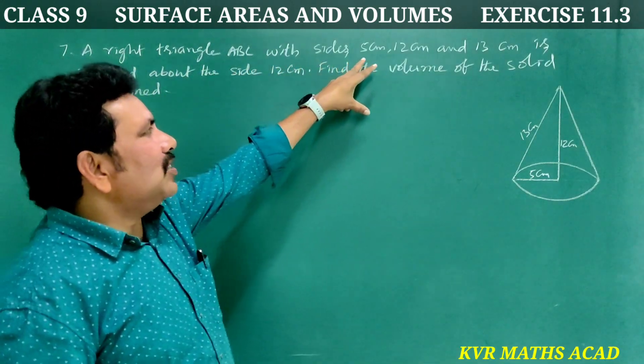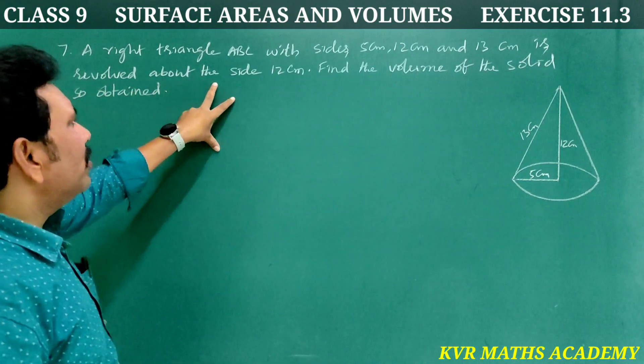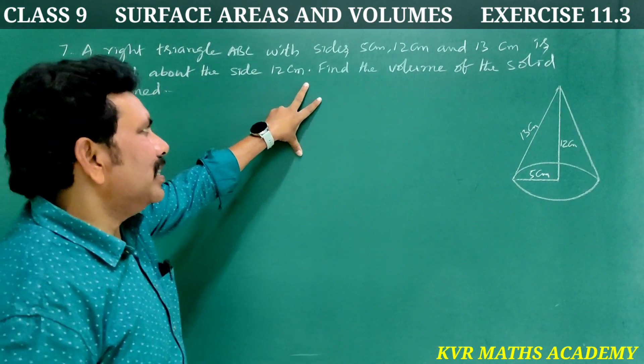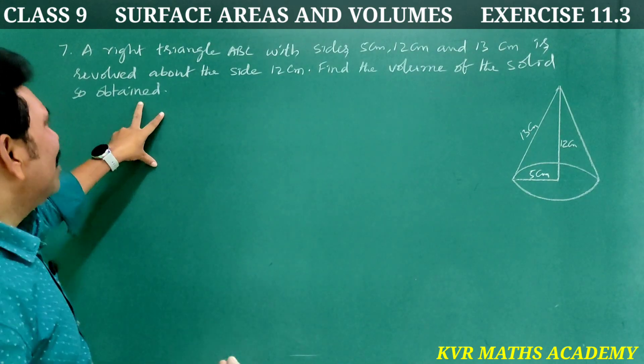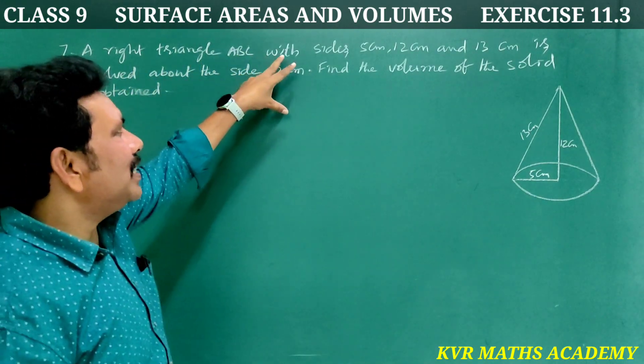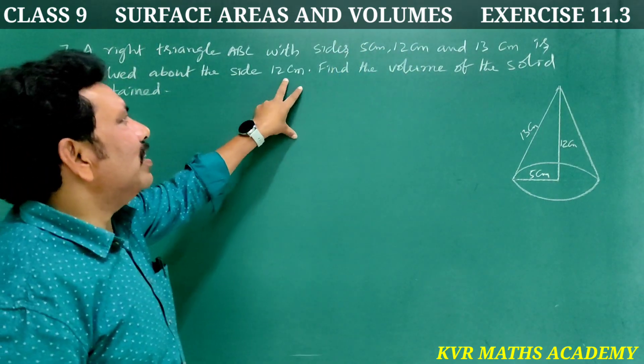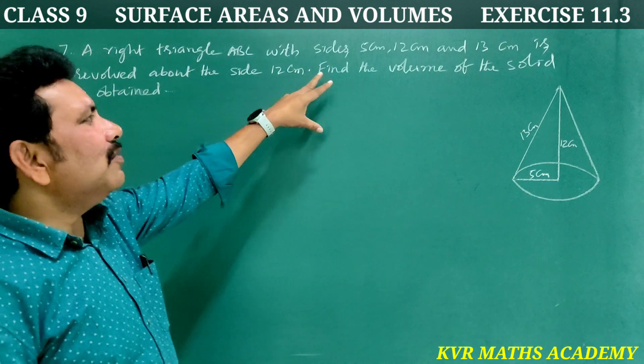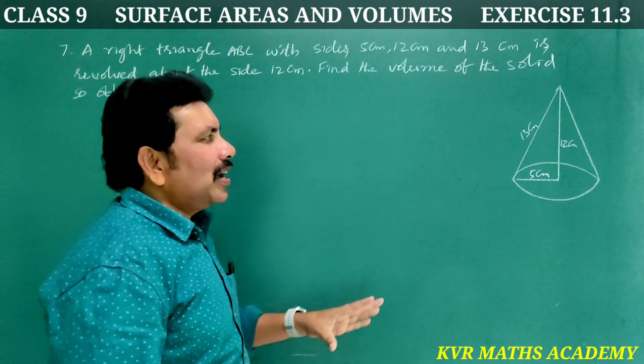Question 7: A right triangle ABC with sides 5 centimeters, 12 centimeters, and 13 centimeters is revolved about the side 12 centimeters. Find the volume of the solid so obtained.